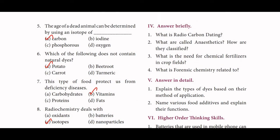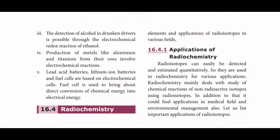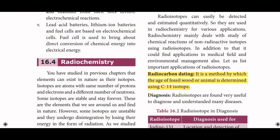Next, fourth section: answer briefly. What is radiocarbon dating? Radiocarbon dating is a method by which the age of a fossil, wood, or animal is determined using the C-14 isotope — Carbon-14 isotope.